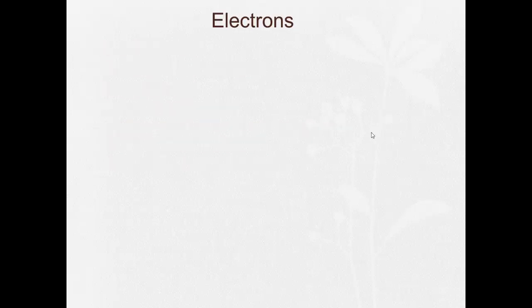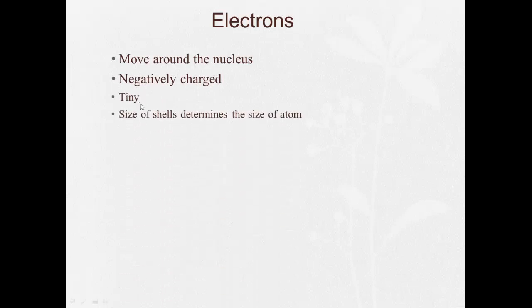Electrons. Electrons move around the nucleus. They are negatively charged. They're tiny. The size of the shells, like I drew on the previous slide, the size of the shells determine the size of the atom. The electrons have very little mass. This means approximately equal to zero.